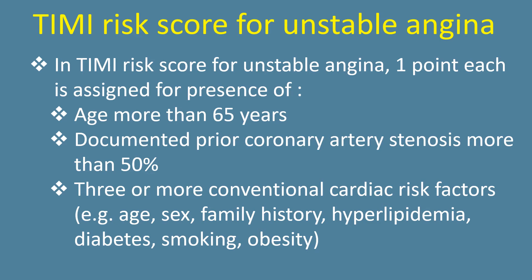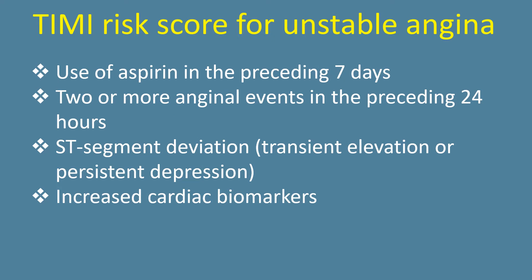TIMI risk score for unstable angina: one point each is assigned for the presence of age more than 65 years, documented prior coronary artery stenosis more than 50%, three or more conventional cardiac risk factors (age, sex, family history, hyperlipidemia, diabetes, smoking, obesity), use of aspirin in the preceding 7 days, and two or more anginal events in the preceding 24 hours.